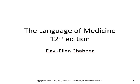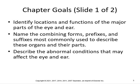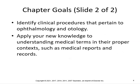We're going to go to chapter 17, the eye and the ear. Language of Medicine, chapter 17. We're going to identify locations and functions of the major parts of the eye and the ear. We're going to name the combining forms, prefixes, and suffixes most commonly used to describe these organs. We're going to describe the abnormal conditions that may affect the eye and the ear, and identify clinical procedures that pertain to ophthalmology and otology. Apply your knowledge to understanding medical terms in their proper context, such as medical reports and records.